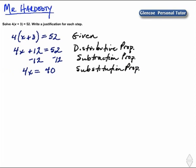Now, to get x by itself, we'll divide both sides by 4 to isolate x. And that, of course, is a division property of equality.